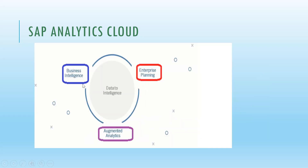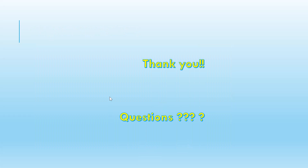As a data-to-intelligence framework, SAP Analytics Cloud encompasses business intelligence, enterprise planning, and augmented analytics. Augmented analytics is very powerful, providing smart discovery, search-to-insight, and smart predict features. Data is at the center, and from data we derive intelligence — that is the main concept of SAP Analytics Cloud. That concludes this video; if you have any questions, please put them in the comment section, and please like and subscribe.